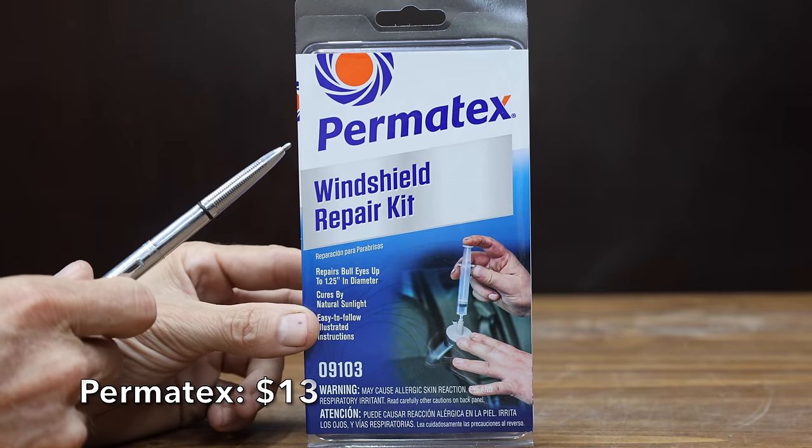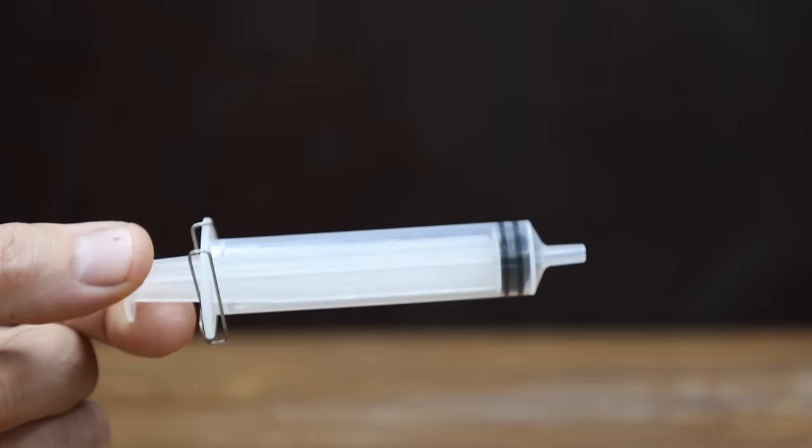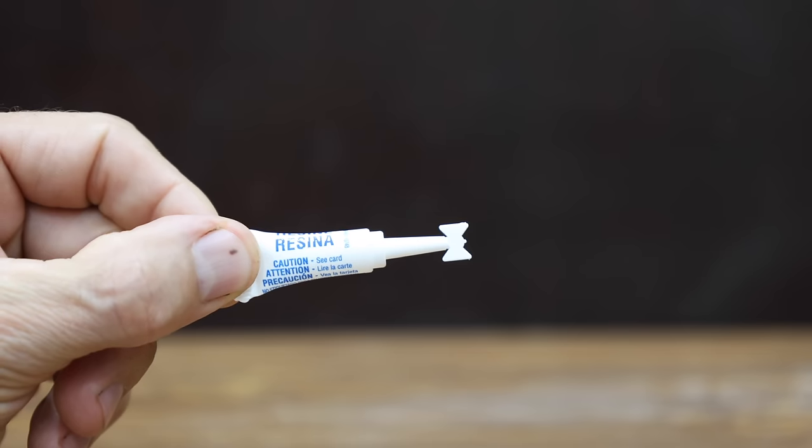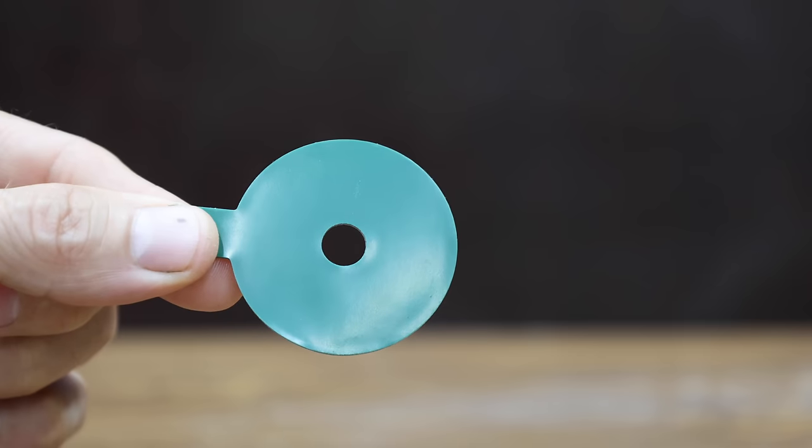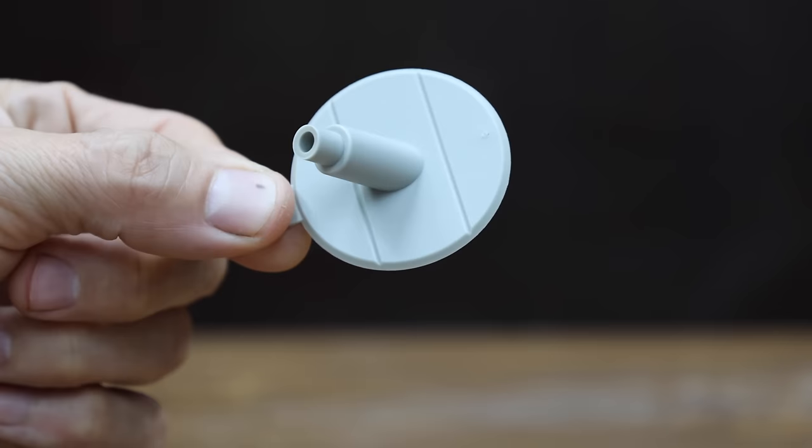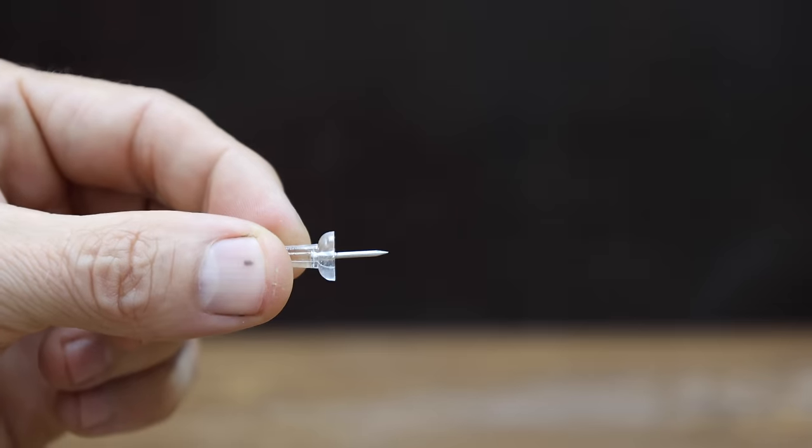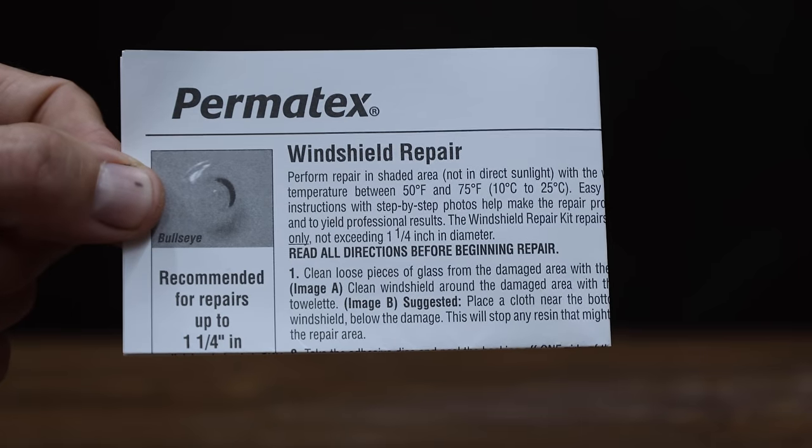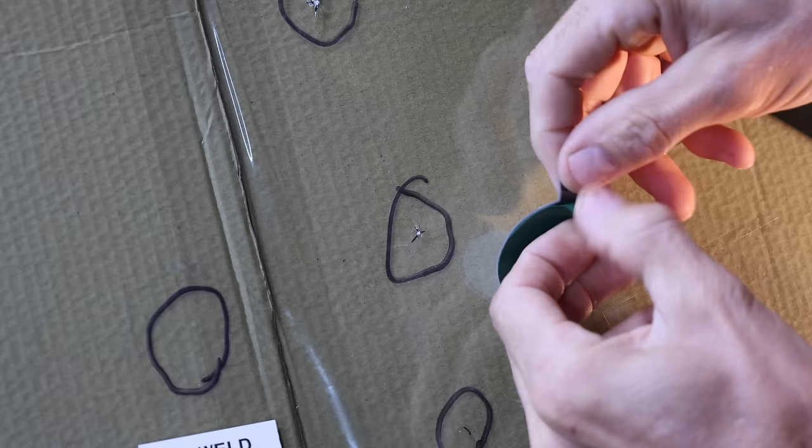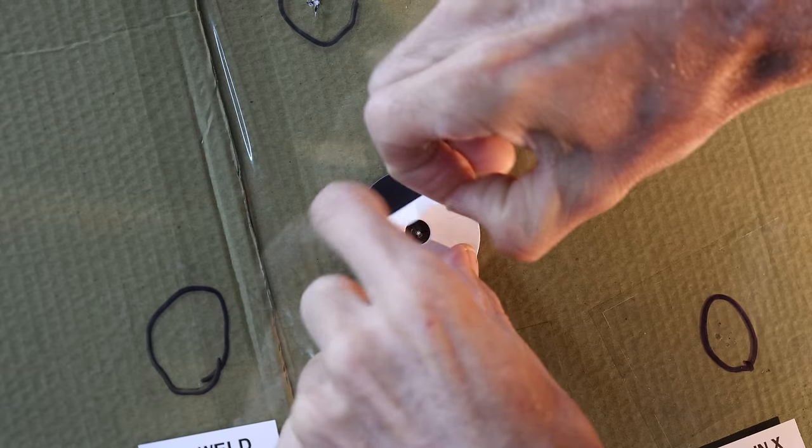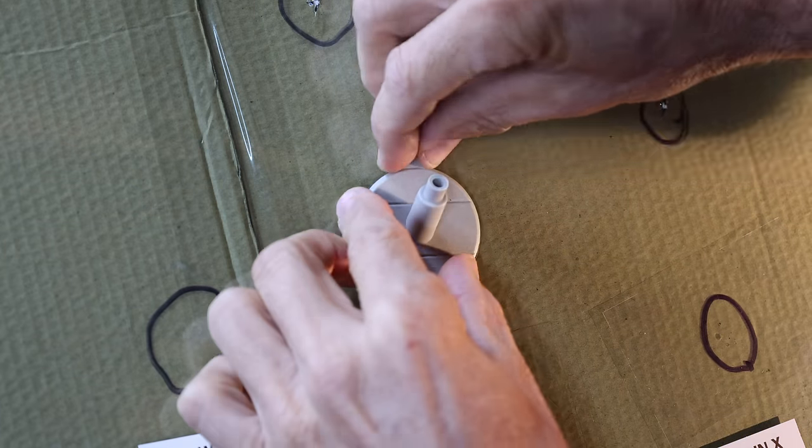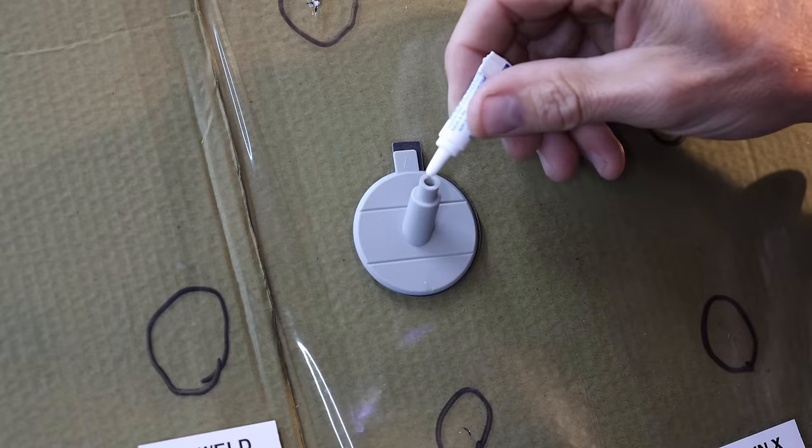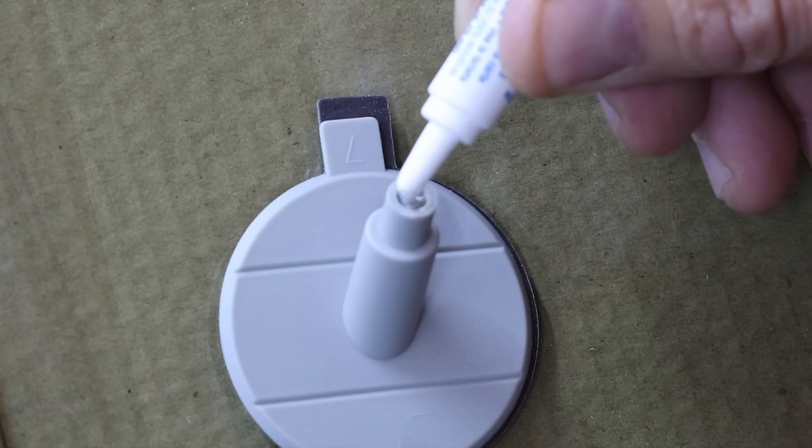Also at a price of $13 is this Permatex brand. Repairs bullseyes up to one and a quarter inches in diameter. The kit includes a repair syringe and plunger, repair compound, adhesive disc, pedestal, curing strip, pushpin, razor blade, alcohol towelette, and one instruction sheet. The Permatex is made in Taiwan. Just like the JB Weld kit, the Permatex repair kit offers just enough supplies to make one repair. And the quality of the kit seems just as good as the JB Weld kit. The kit instructions were very close to the same as the JB Weld's.